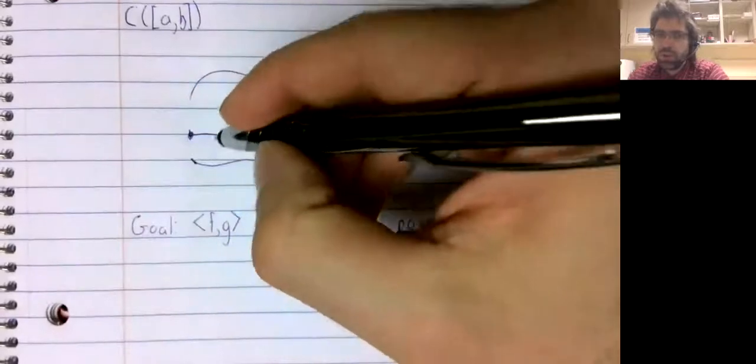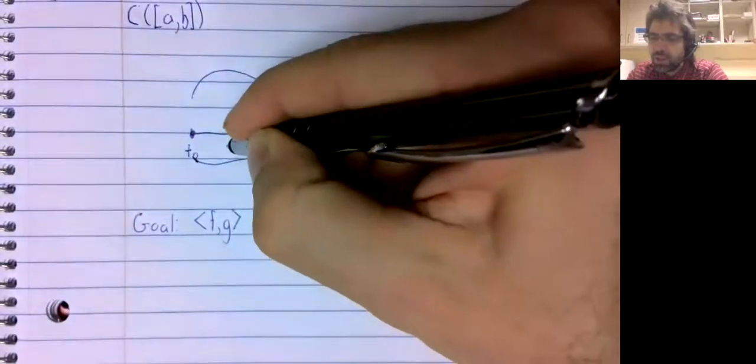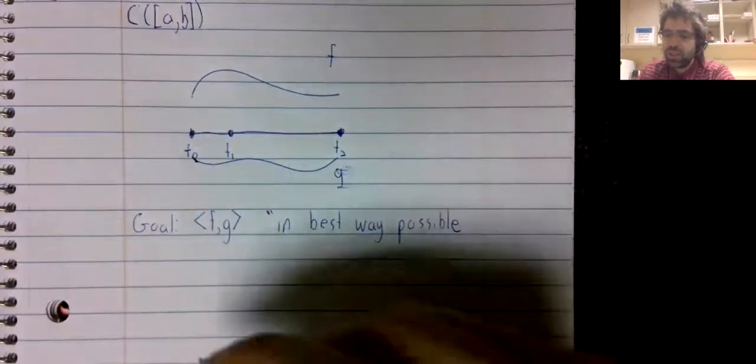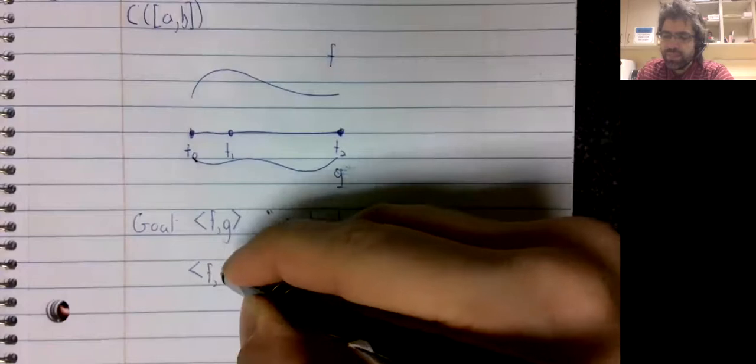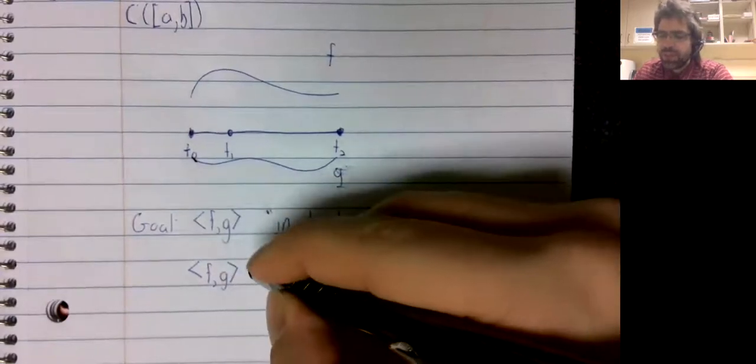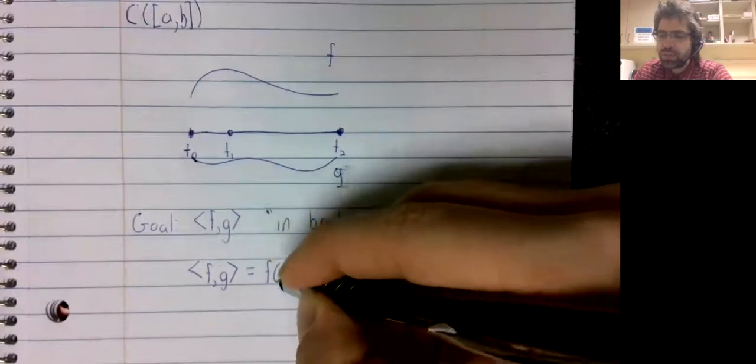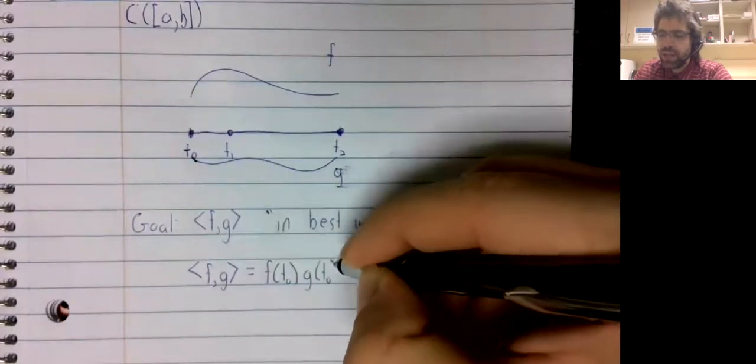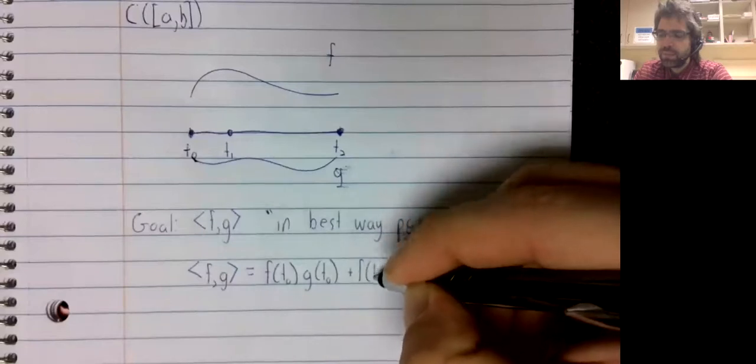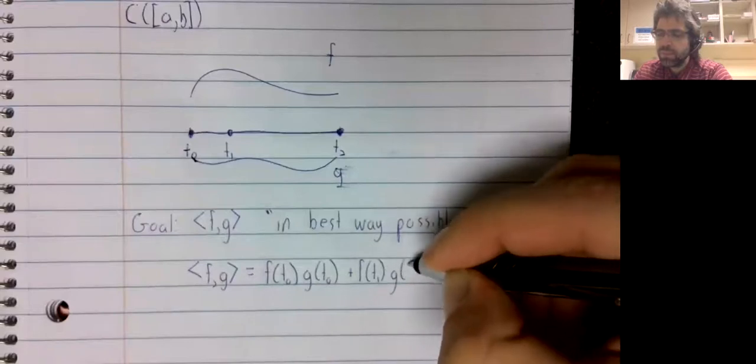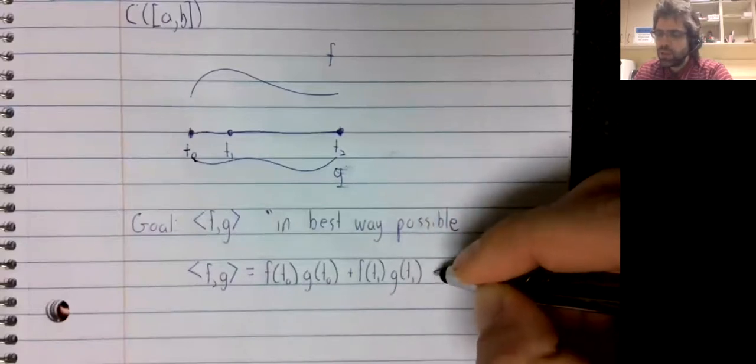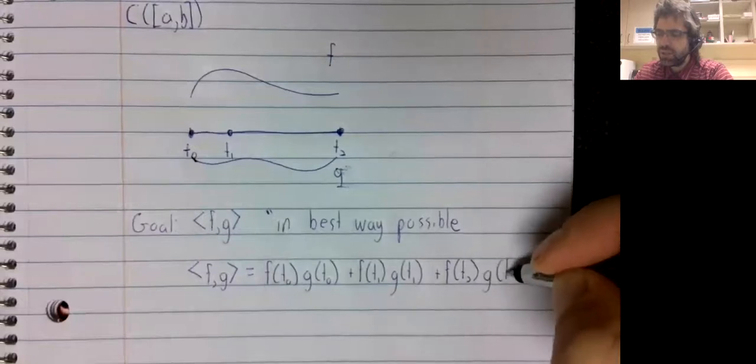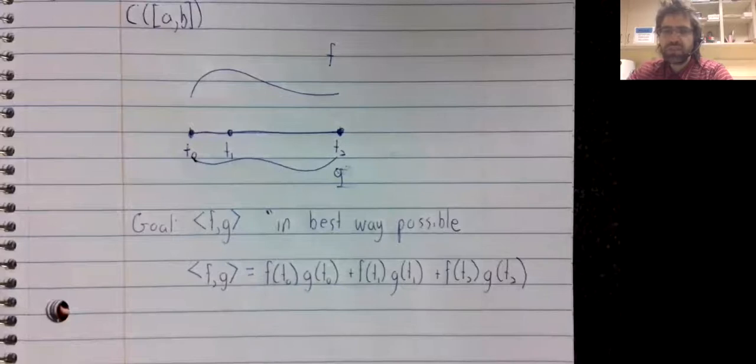Say we call this T0, and this T1, and this T2. And we define the inner product in this way. What are the weaknesses of this definition?